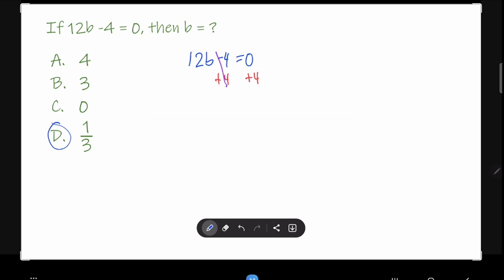That becomes 0. And the 12B, you just copy it. On the other side of the equal sign, we have 0 plus 4 is just plus 4 or just simply 4. Positive 4 and no sign of 4 is just the same.